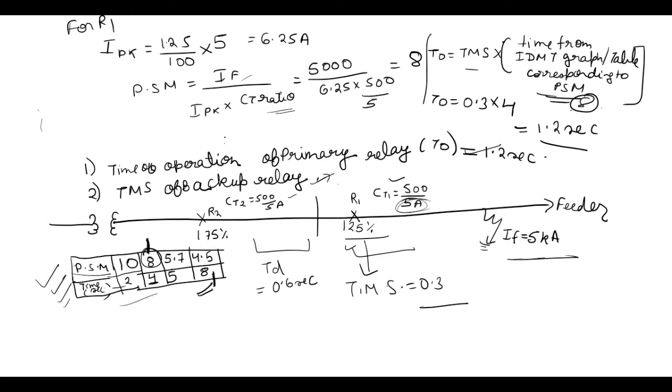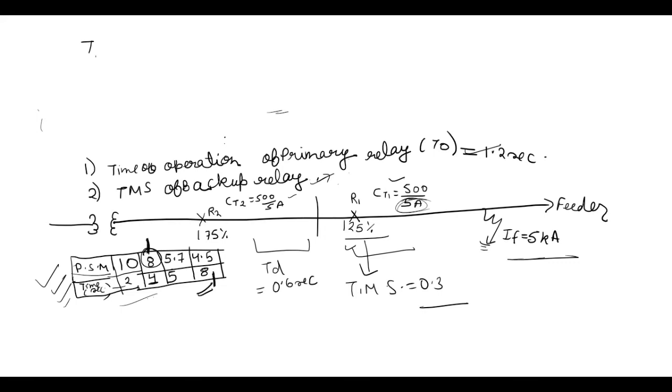And now we have to find TMS of backup relay. Okay. So we know that the time of operation of backup relay is equal to time of operation of primary relay T0 plus the delay, which is 1.2 plus 0.6, so 1.8 seconds. And now again we will find pickup current and now this is for R2.